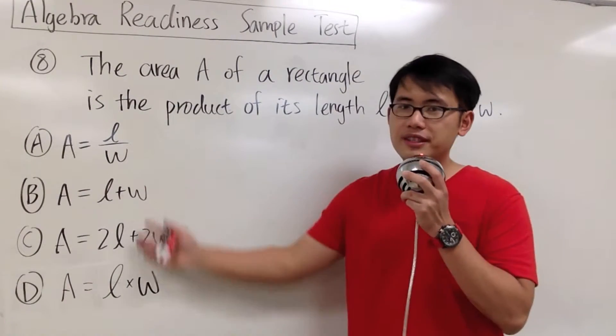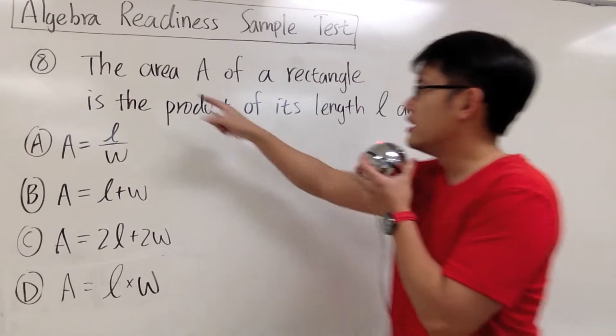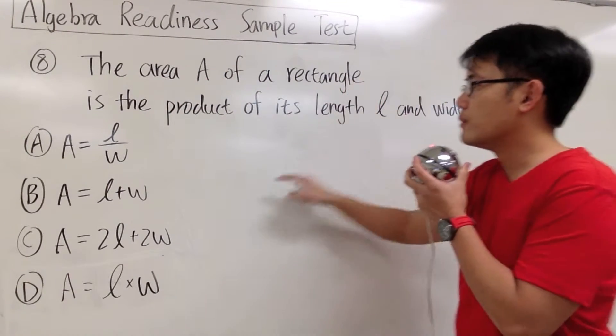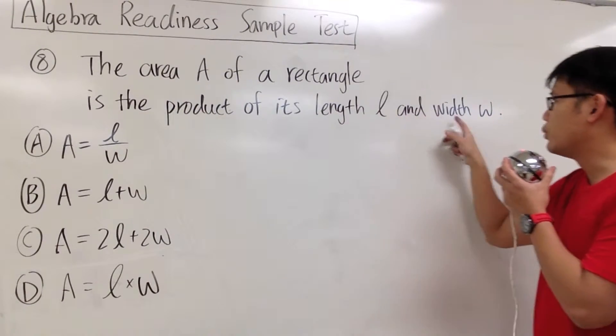Number 8, we are going to see which of these equations is the translation of this sentence. It says, the area A of a rectangle is the product of its length L and the width W.